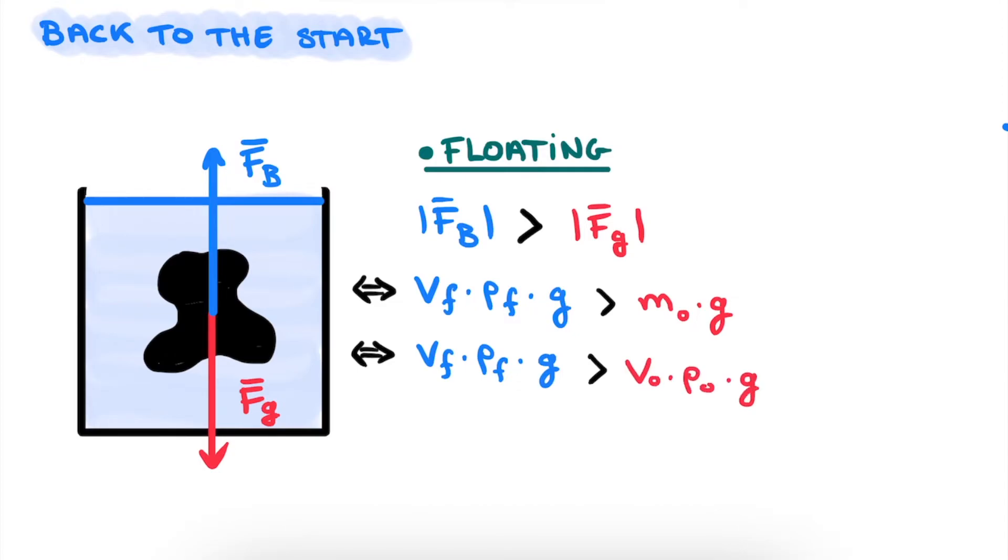And here we need to make the important distinction between Vf, the volume submerged in the fluid, and Vo, the total volume of the object. This will be very important once we start looking at the icebergs. And at this point, we can of course cancel out g.